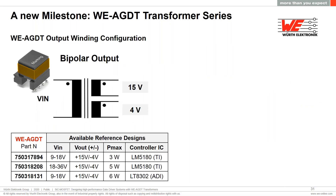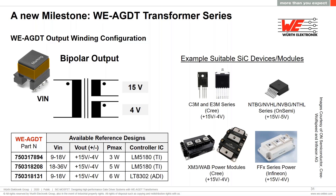There are currently three WE-AGDT transformers with bipolar output voltage rails, providing +15 V for SiC MOSFET turn-ON and −4 V for turn-OFF. They cover an input voltage range from 9 V to 36 V and output power up to 6 W for the 750318131 device. Reference designs are also available. Shown here are some state-of-the-art SiC MOSFET devices from different manufacturers suitable for use with the bipolar output WE-AGDT transformers — though this is only a sample, as there are many more.